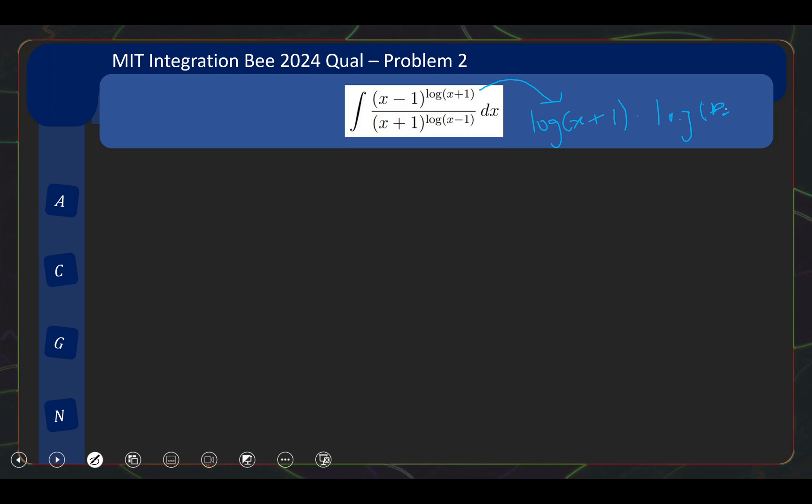Now if you take the log of the bottom, what do you get? You bring down the power and then u times log(x+1). So what you realize is that if you take the log of the top and you take the log of the bottom, you get the same expression. So the top and bottom are actually the same. So this whole expression is actually 1. So what you are interested in is the integral of 1 and so the answer is just x. Not too difficult, it's a good warm up first two problems, we are off to a good start.